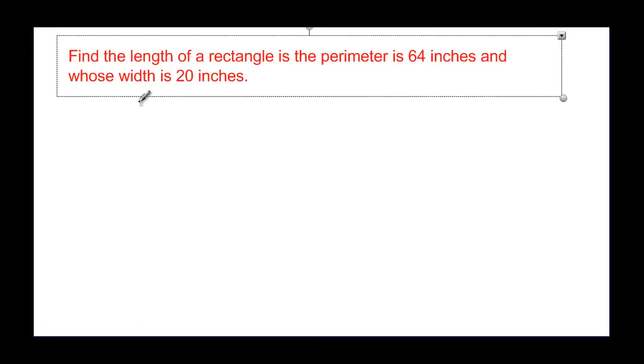This one is a little trickier. But let's read it. Find the length of a rectangle. That's what we are looking for and we are going to call that L. Of a rectangle, if the perimeter is sixty-four inches and the width, we are going to call that W, is twenty inches. Now why did I put all that in there? Because the formula is perimeter equals two times the length plus two times the width.